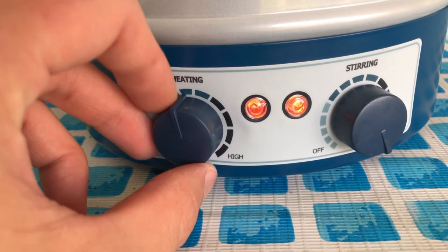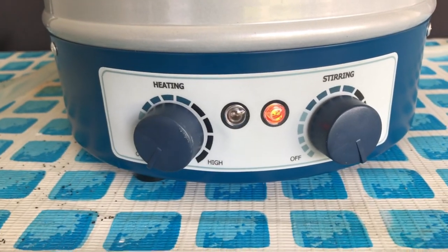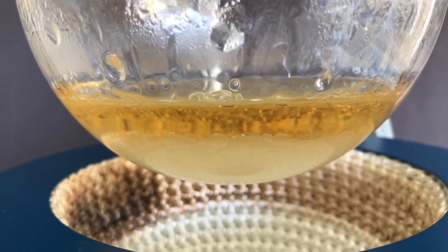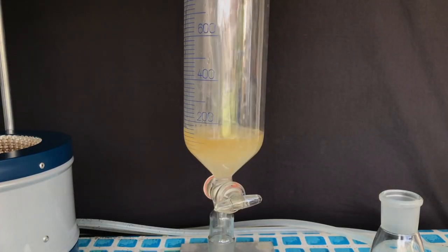One hour has now passed and the heating mantle was turned off. Two layers became visible and everything was transferred to a separatory funnel. The bottom layer is the aqueous layer and it was drained off.